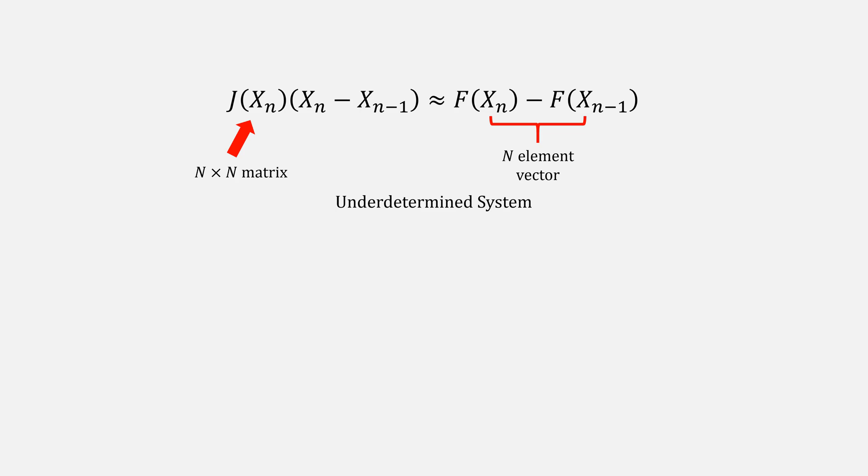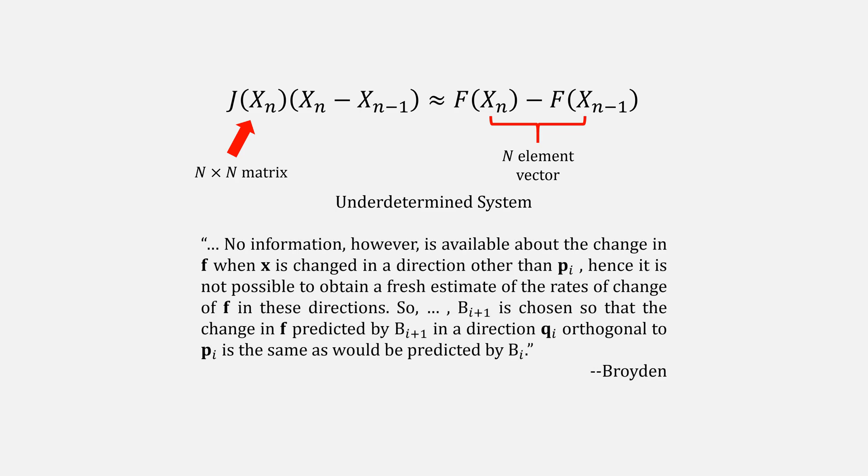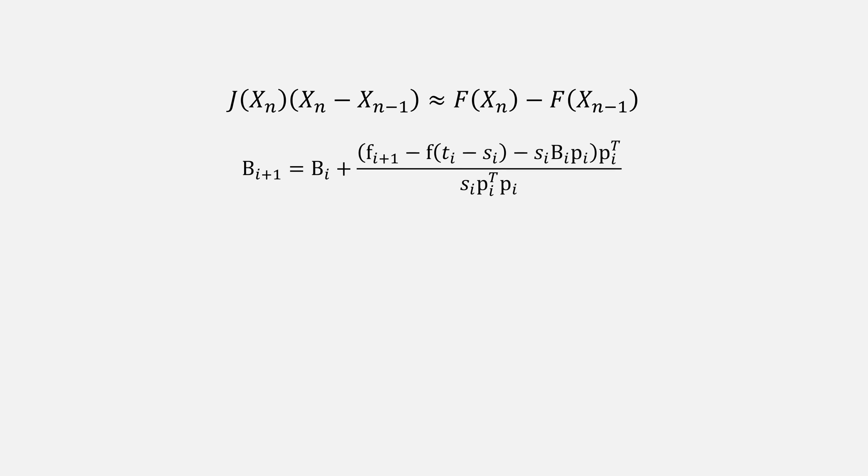The trouble is, our right side is an element vector, which means this is an underdetermined system. Broyden adds some conditions, essentially letting the change in the perpendicular direction be orthogonal to the current one, essentially adding these two constraints. This lets him then solve for j.